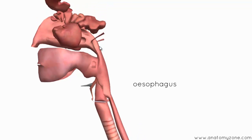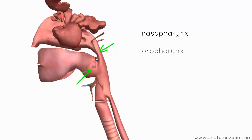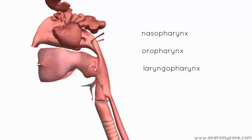The pharynx is this region between the nasal cavities, the back of the oral cavity, and just sitting above the trachea and the esophagus. There are three parts to the pharynx: the nasopharynx, the oropharynx, and the laryngopharynx. Food passes out of the oral cavity into the oropharynx, and then constrictor muscles contract and propel the bolus of food through the oropharynx into the laryngopharynx, and then it passes down into the esophagus below. During swallowing, the soft palate swings up and closes off the nasopharynx.